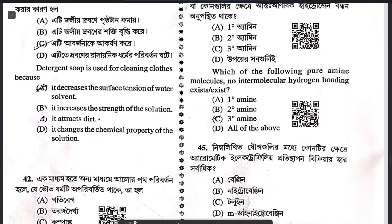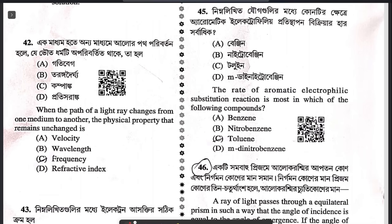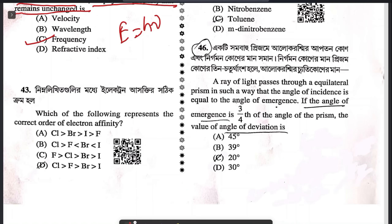Question 41: detergent soap is used for cleaning clothes because it lowers the surface tension of the water solvent. Answer A. Question 42: when the path of a light ray changes from one medium to another, the physical property that remains unchanged is frequency. Frequency does not depend on the medium; it depends only on energy — E = hν.